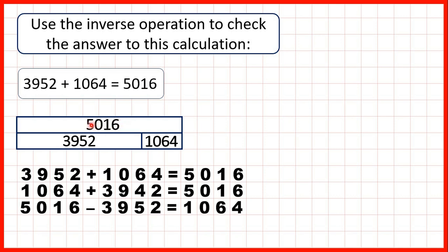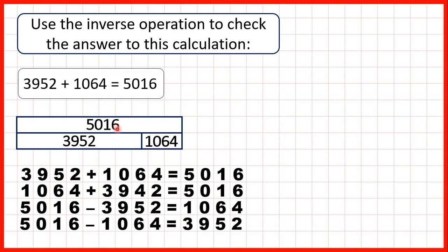If we start with the number on top — 5016 — we should be able to subtract 3952 to get 1064. So if you have an addition calculation, subtracting one of the numbers from your answer should give you the other number. Or we could work out 5016 minus 1064 and we should get 3952. So addition calculations can be read backwards as subtraction calculations.